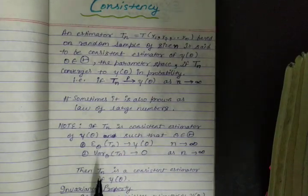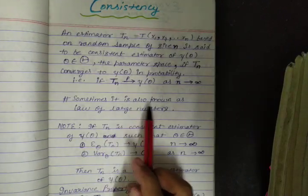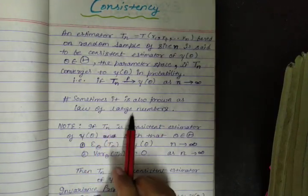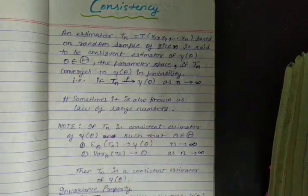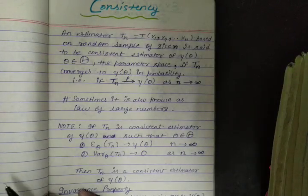Everything will become clear to you when I give you numerical examples. Sometimes consistency is also known as the law of large numbers or weak law of large numbers.